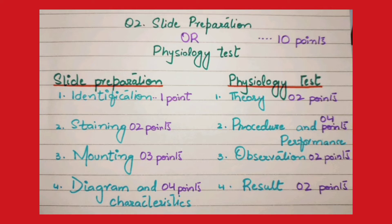Now coming towards the next part — physiology test. If you are given physiology test in question number two, it again has four parts. First is theory, worth 2 points. Second is procedure and performance — when you write the procedure and perform the practical — worth 4 points. Third is observation, what you observe from the procedure, worth 2 points. Fourth is conclusion, that is the result, worth 2 points. All together this test contains 10 points, equal to one mark.